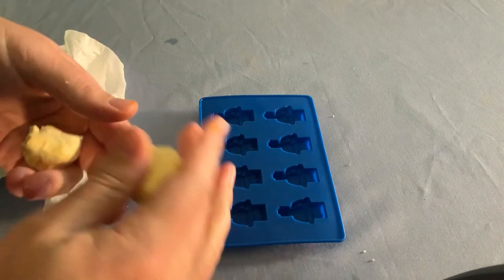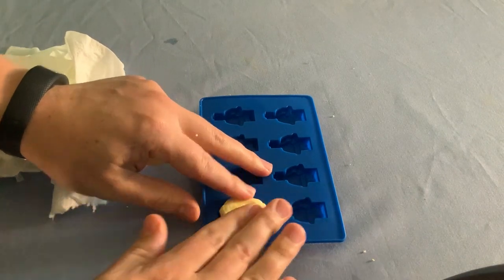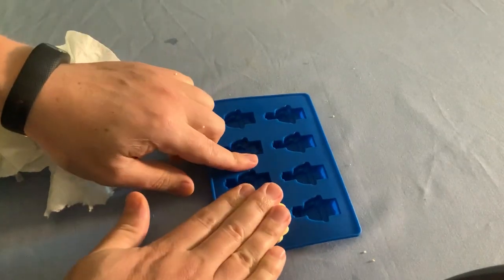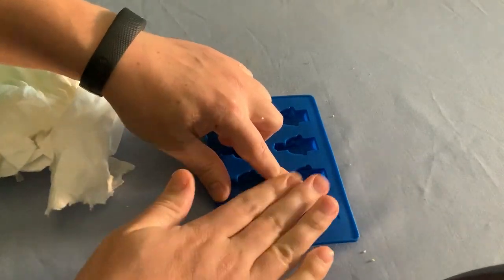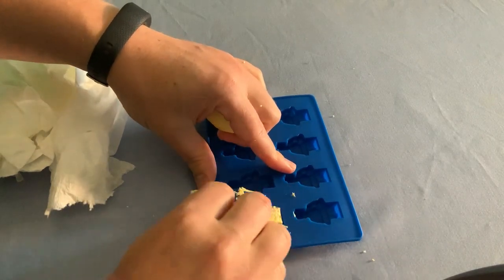The final step of the process is to decide what you want to do with your plastic. I'm going to squeeze mine into these little Lego men moulds. If you've got moulds, that's great. You could use biscuit cutters or if you don't have moulds, you could just squeeze it into any shape that you like.